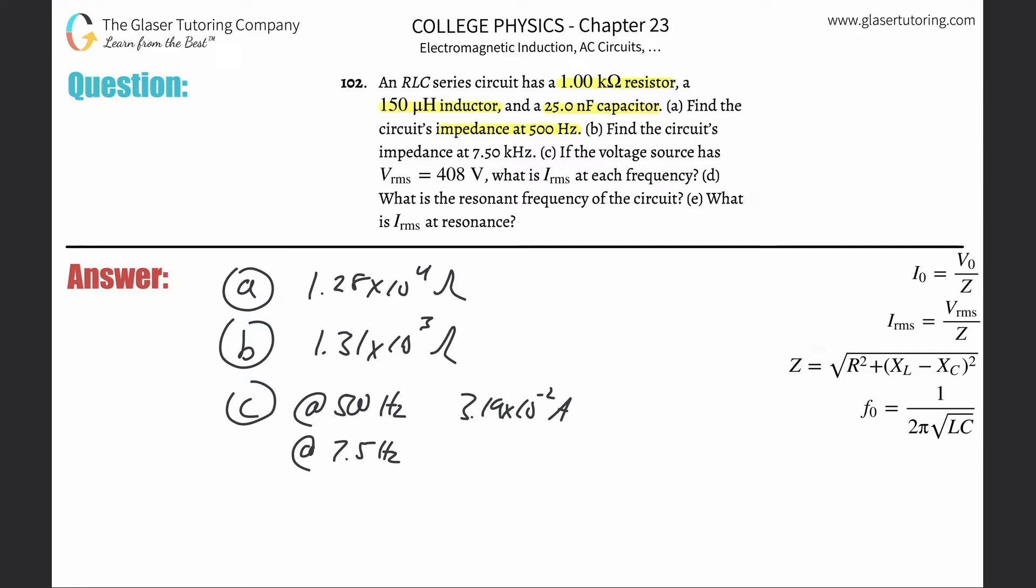For letter D, it's basically going to be 8.22 times 10 to the fourth hertz. And then E, we're going to have a value of about 0.408 amps.